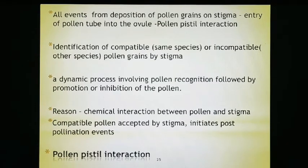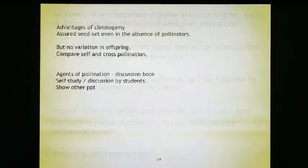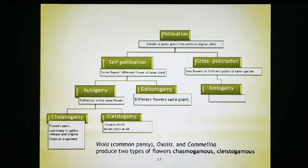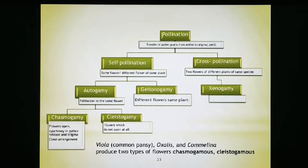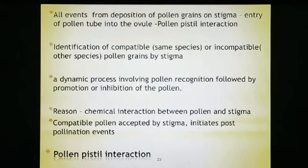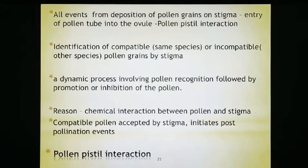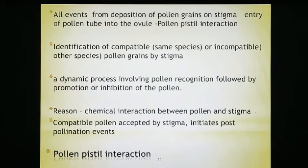Hello students, welcome to our next video lecture. In this video lecture we are going to discuss further points of your chapter. Till here, till pollination, we have already discussed what is self-pollination, cross-pollination, autogamy, geitonogamy, xenogamy, chasmogamy, and cleistogamy. So you have gone through this particular topic. Moving on to the next slide, we are going to start with the pollen-pistil interaction. The pistil is a cylindrical-like structure. You will find this on page 31 of NCERT.